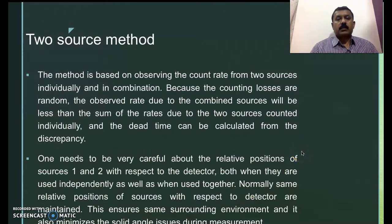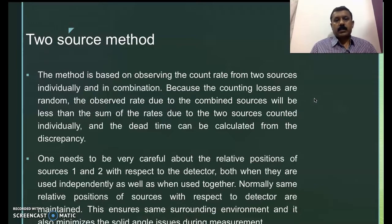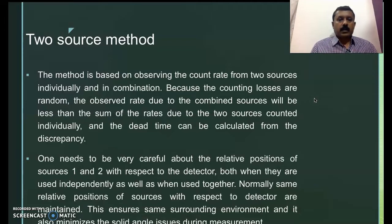In this experiment, we use a method called the two-source method to determine the dead time of the GM counter. There are various other methods available in the literature, but here we discuss the two-source method, which is relatively simpler. In this method, we measure counts using two identical sources — either beta or gamma sources — one after the other and also using them simultaneously.